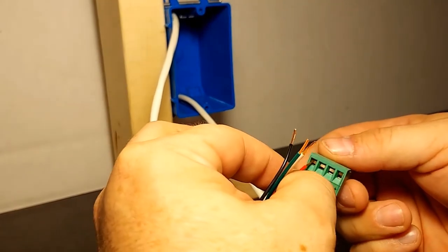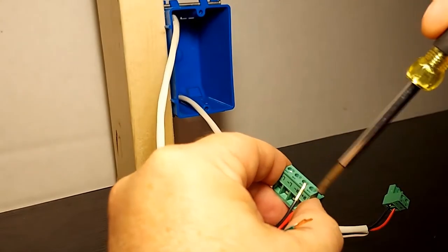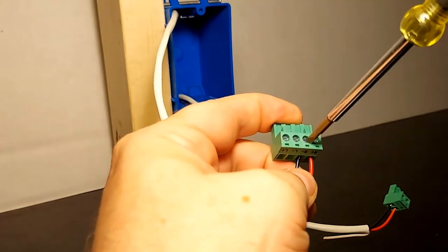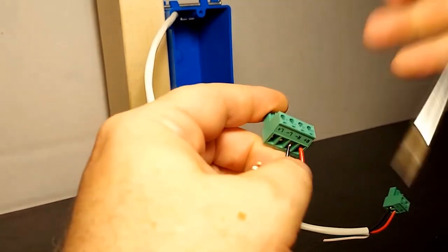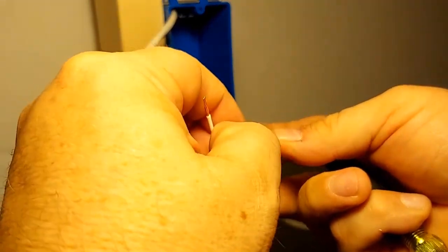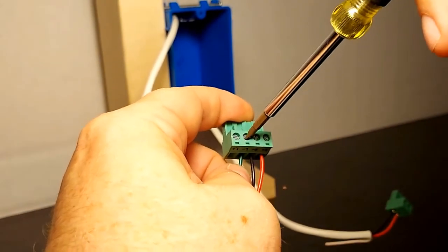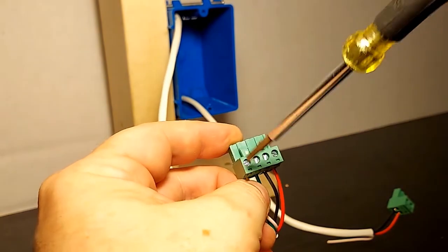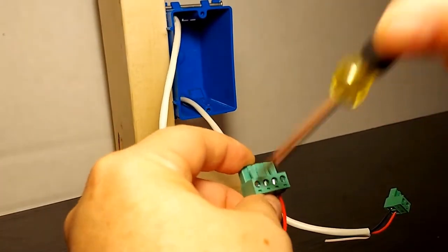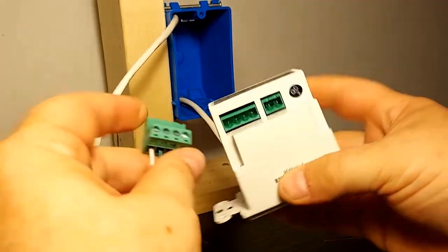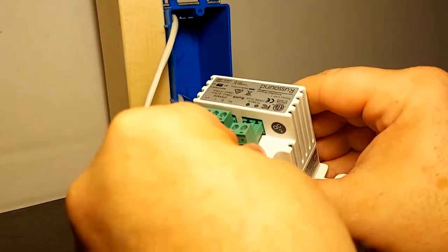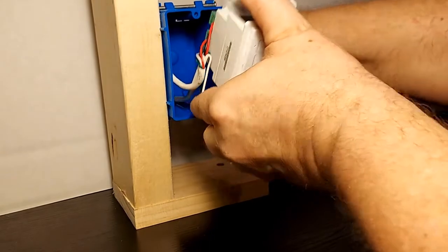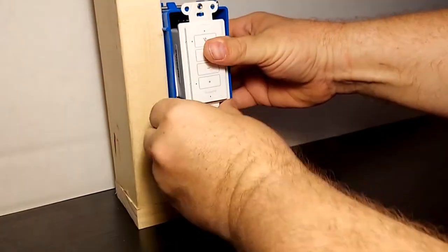We'll start with the right positive and snug it down. Now the negative. Let's move on to the left speaker. Left negative, that's the green, and the positive for the left speaker. Let's plug them into the VKP1. First the speakers, there's the power, and into the wall it goes. Perfect.